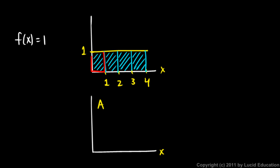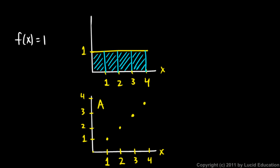Down here on this bottom axis, we're going to graph the area — a graph of A versus x. This little square right here has a height of 1 and a width of 1, so this area is 1. When we've moved to the right 1 unit, area swept out is 1. At x=2, area is 2; at x=3, area is 3; at x=4, area is 4. It starts at 0, because when we haven't moved at all, we haven't swept out any area.